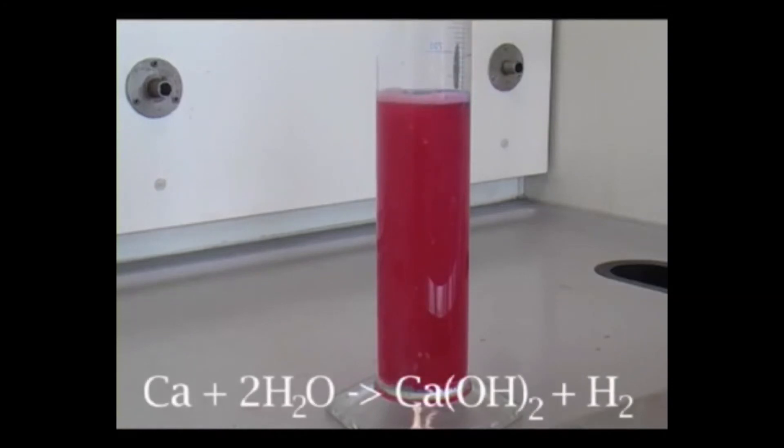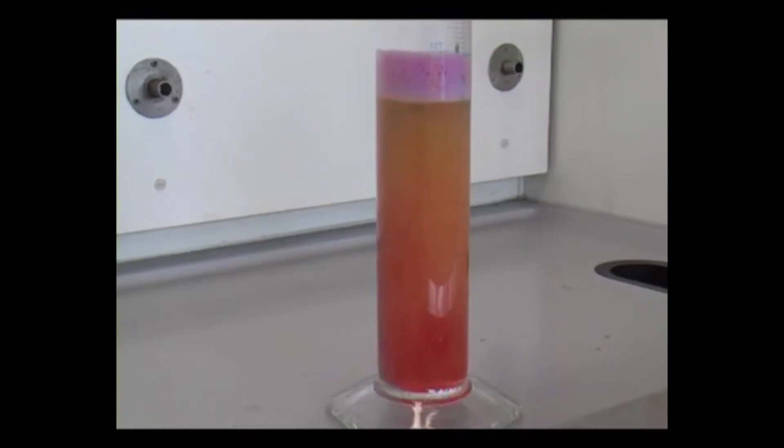As before, hydrogen is produced, giving a foam at the top of the cylinder. And also, as the alkali calcium hydroxide is produced, we can see that the universal indicator solution gradually turns orange, then green, then blue, showing that the solution has now become alkaline.